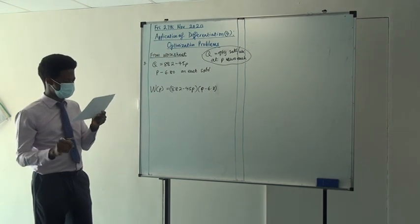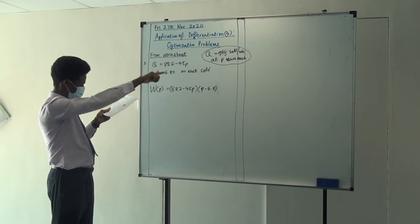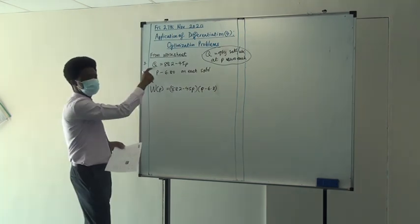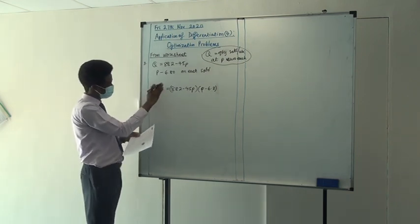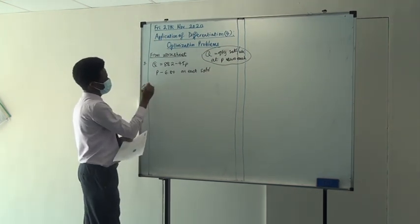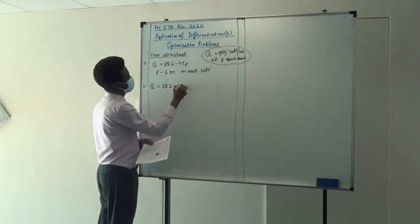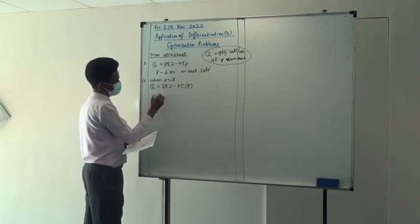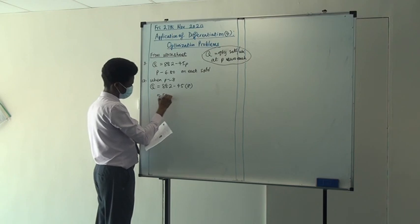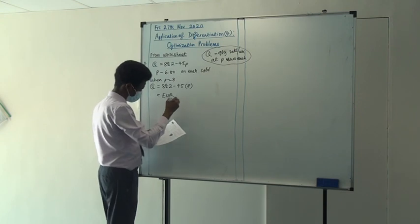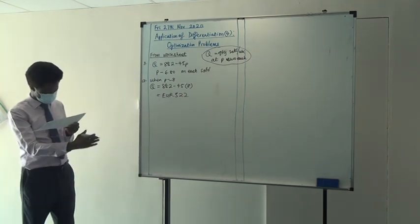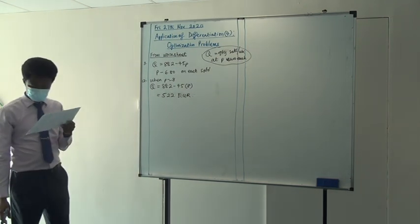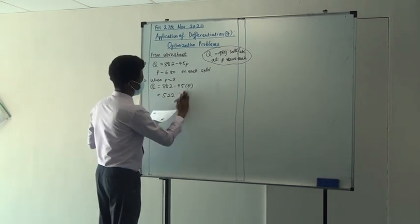Write down how many kilograms she sells in a week if the price is 8. So Q is equal to 883 minus 45 times 8. When P is equal to 8, what do we get for that? 523. That is the number of kg. Find how much Maria earns in the week.